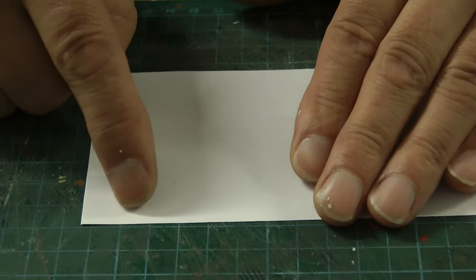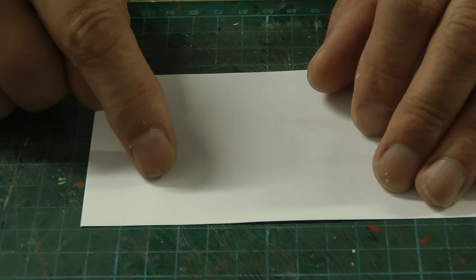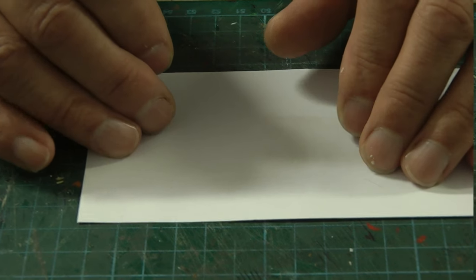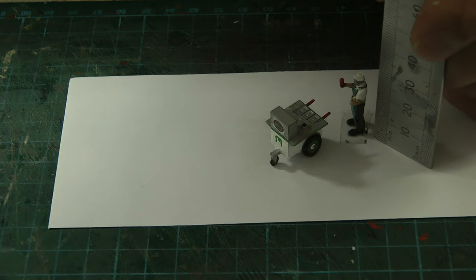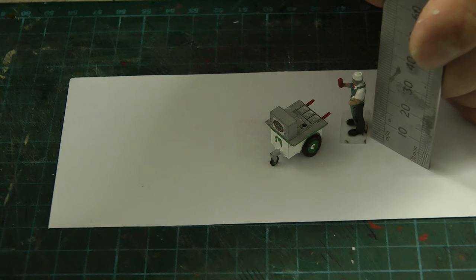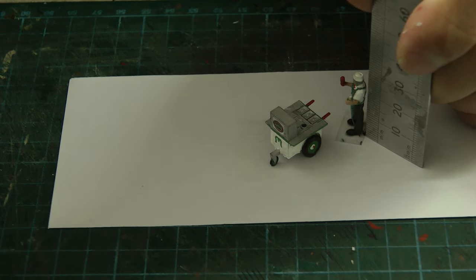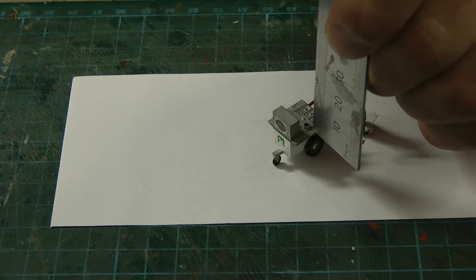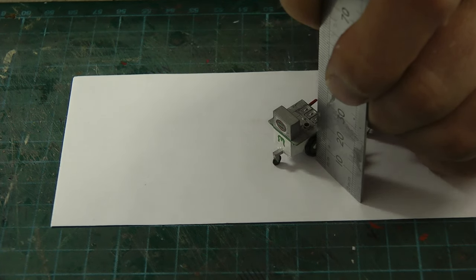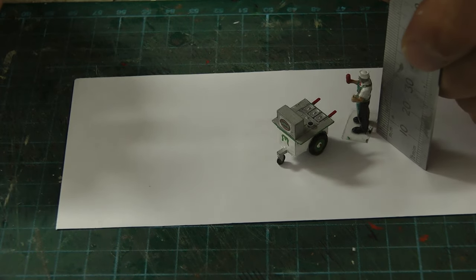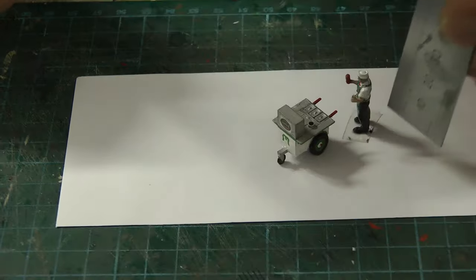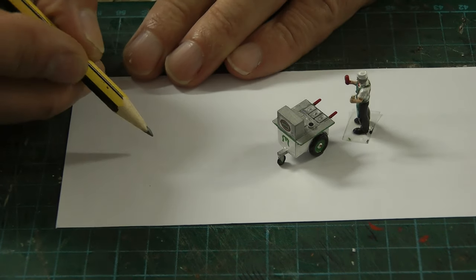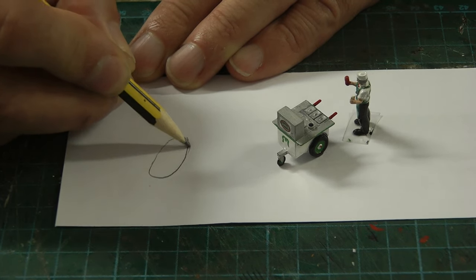So I'm taking some measurements of the height of Luigi here. From the floor to the top of his hat is roughly 27mm. So if I take that distance off the trolley, which is 12mm off the floor, that's 12mm and 27mm, so that's 15mm above the cart here. I'll just quickly draw that.